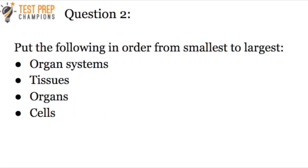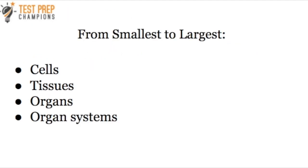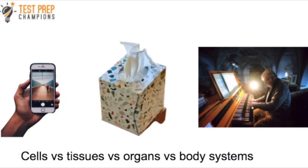Here's question two: put the following in order from smallest to largest. From smallest to largest, we've got cells, tissues, organs, and organ systems. And here's that picture again just to drive the point home.